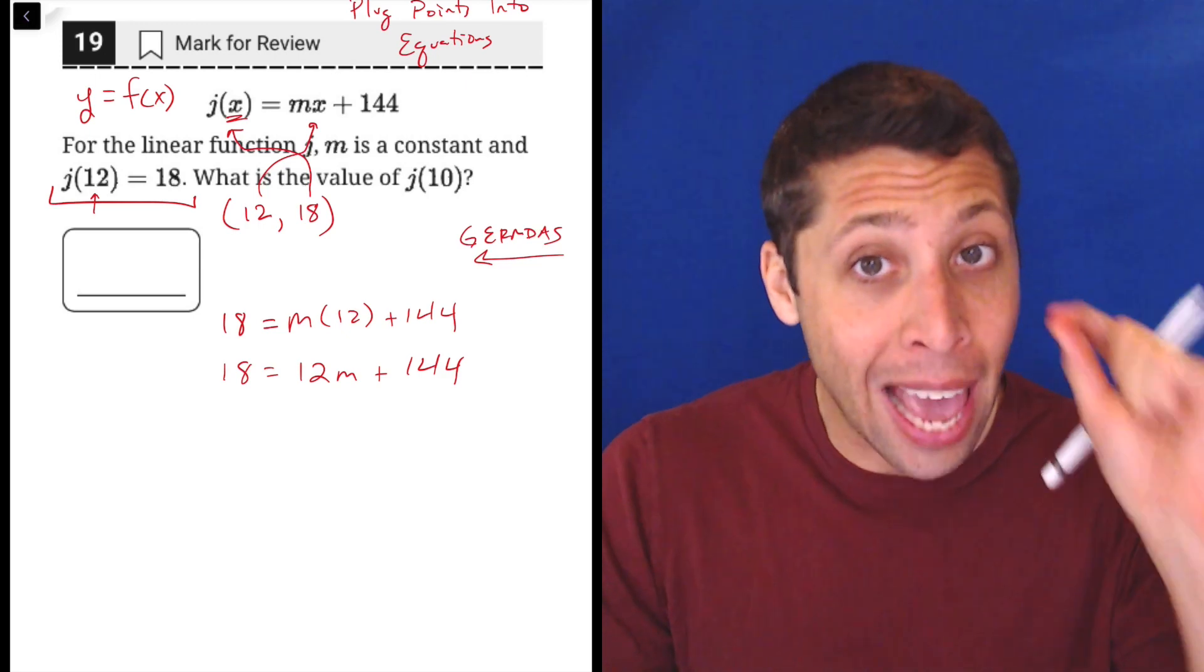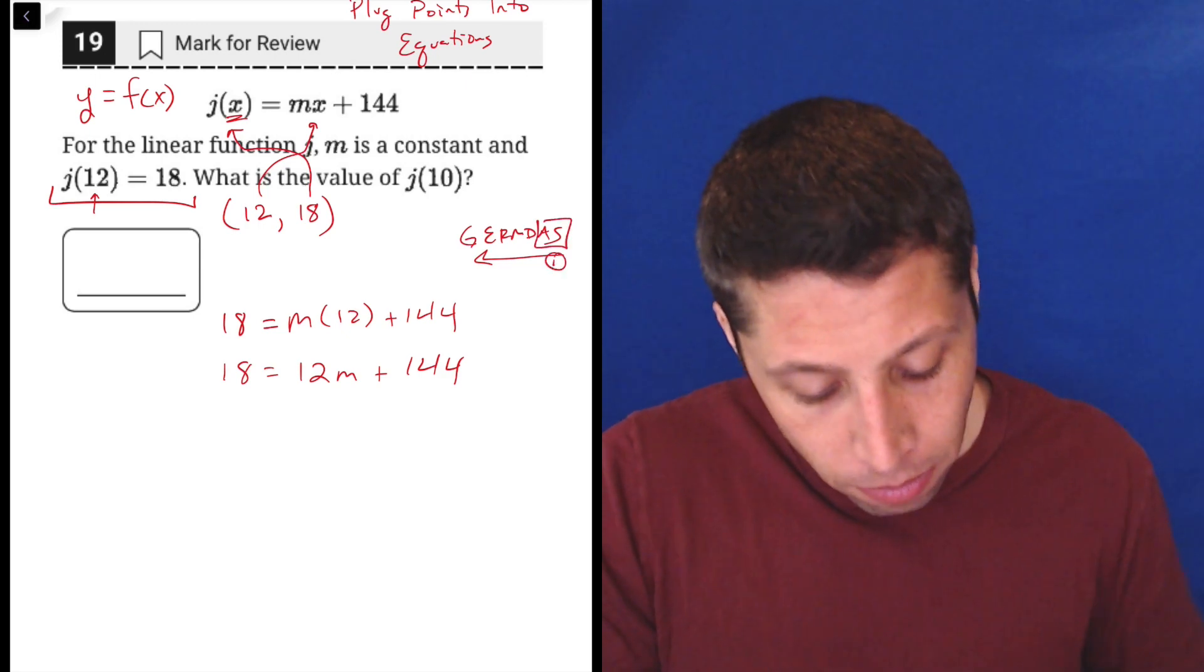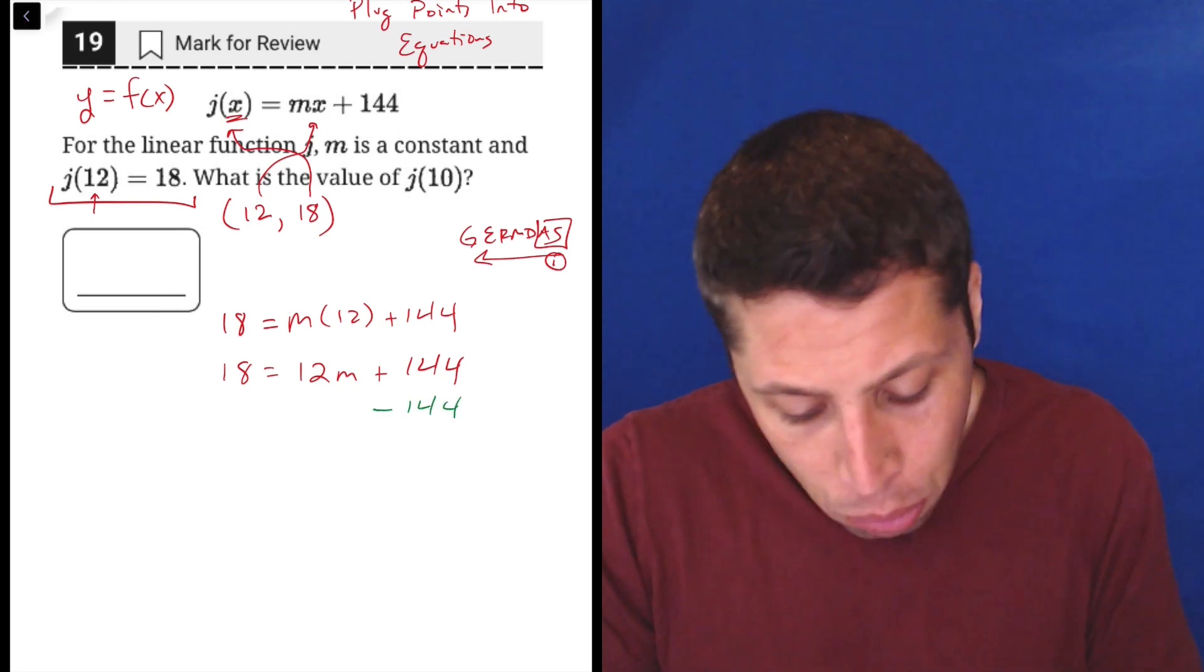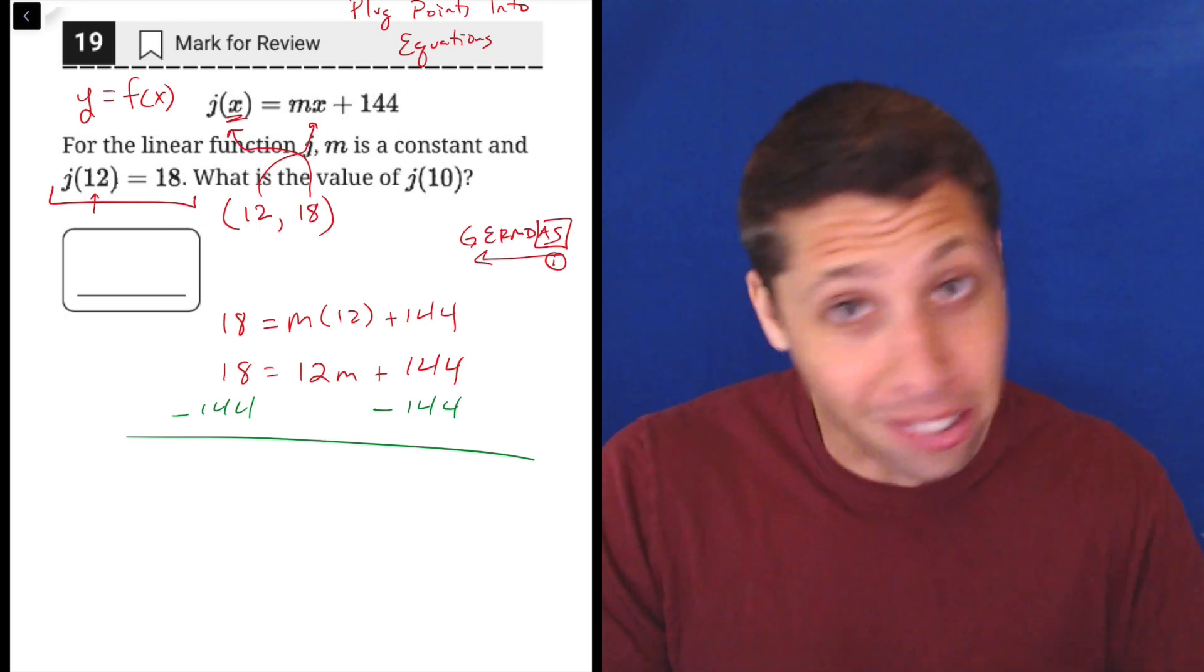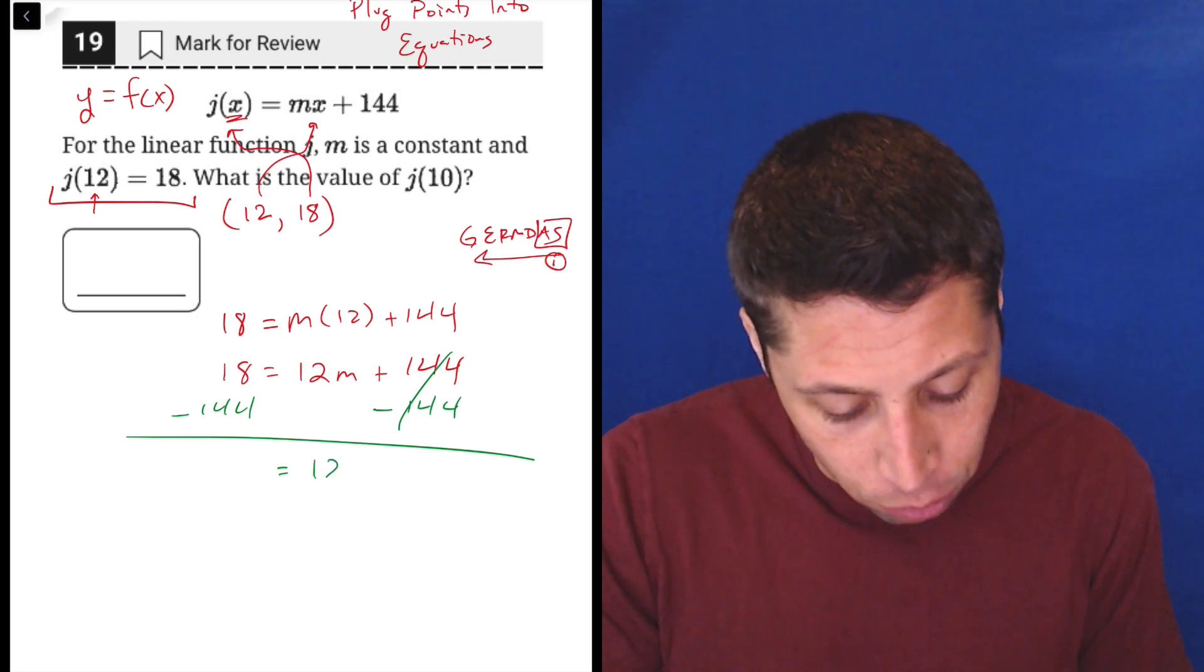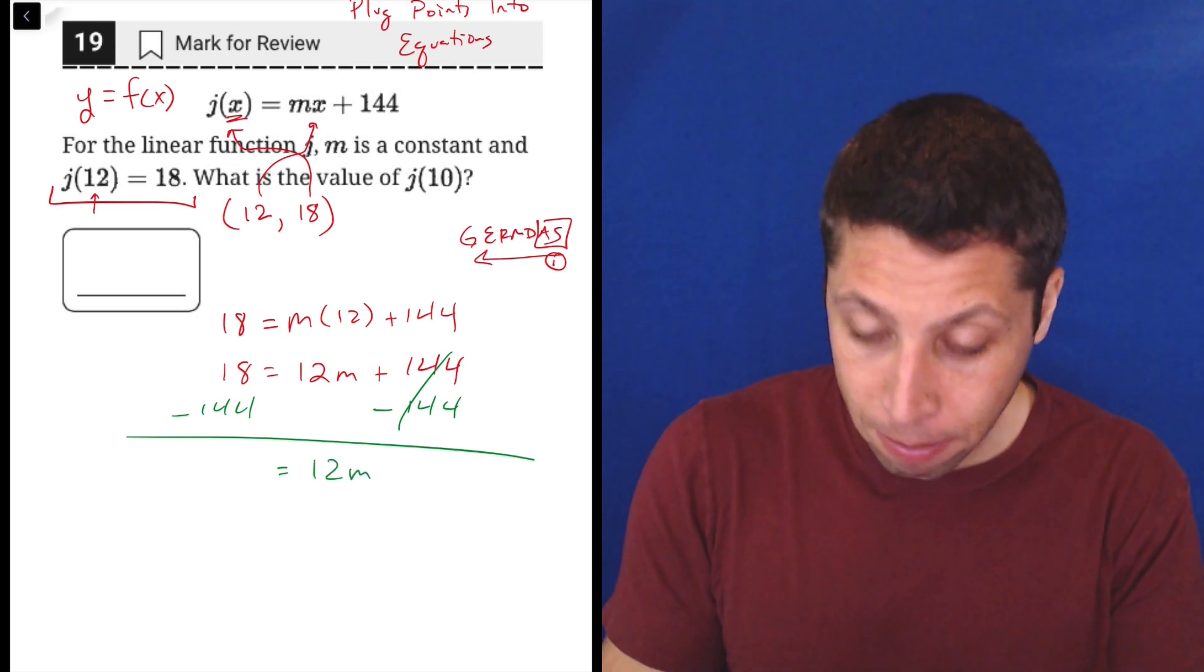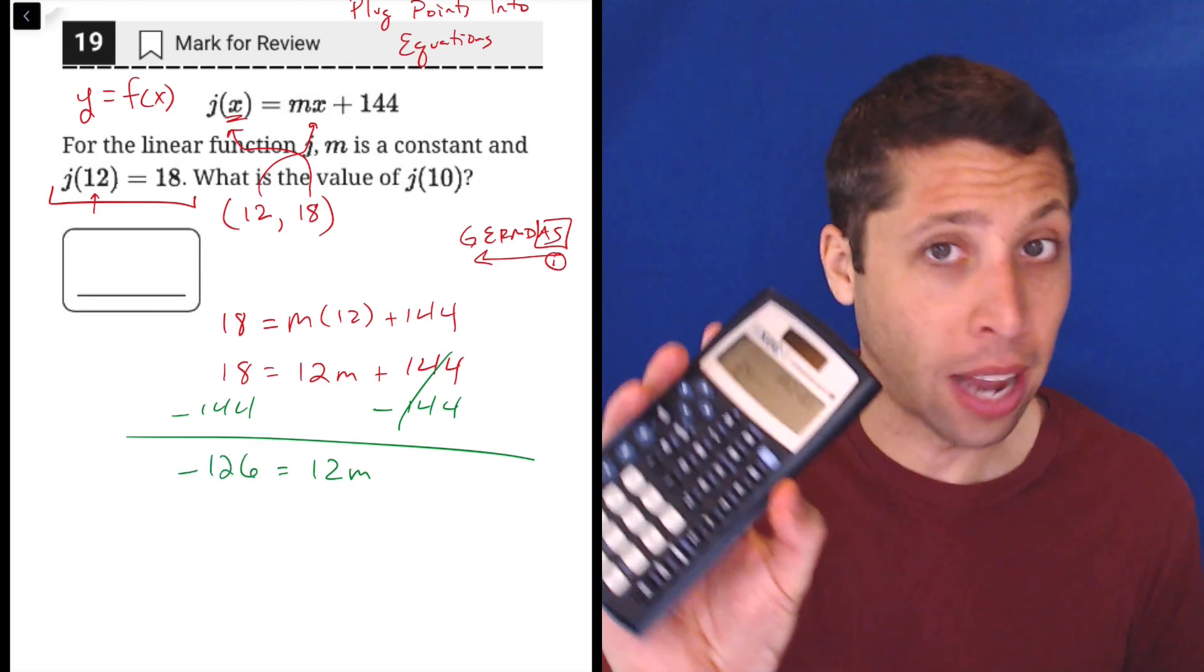And so the first step of getting m alone is to do addition subtraction. So we see this 144, we've got to make it go away. So we're going to move it to the other side through subtraction because 144 minus 144 is zero. So this side cancels out. On this side, we still have 12m, but now we have 18 minus 144 is negative 126 on this side.